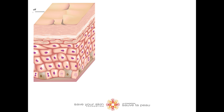This layer is the epidermis. Within the epidermis, there are different cell types. We are going to focus on the basal cells. The basal cells are present in the most bottom layer of the epidermis, called the basal layer, just above the basement membrane.